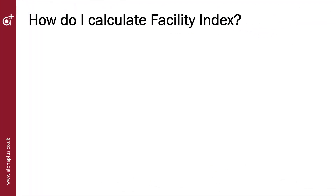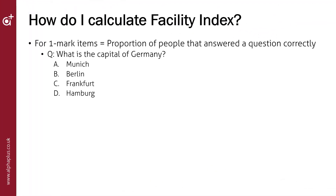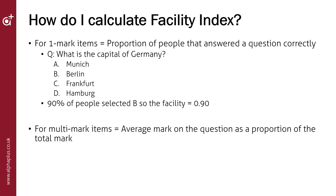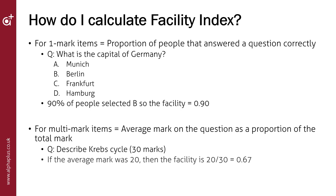Facility values are relatively easy to calculate. For single mark items, the facility value is the proportion of students giving the correct answer. For multiple choice items, it is the proportion of students who selected the key. In the example shown, 90% of students selected B, which is the key, giving a facility value of 0.9 — making it a very easy question. For multiple mark items, the facility value is the average mark scored by students as a proportion of the total marks. In the example, the average mark is 20 out of a total of 30, giving a facility value of 0.67.